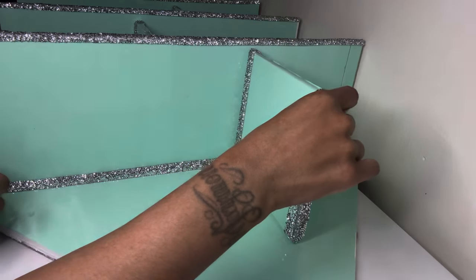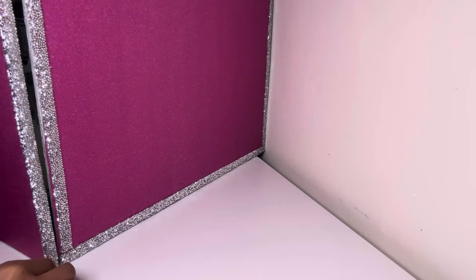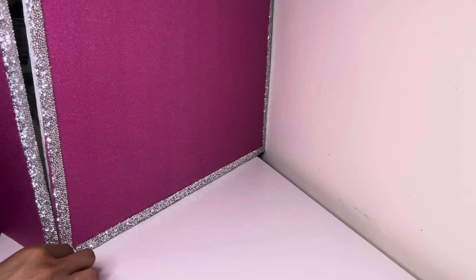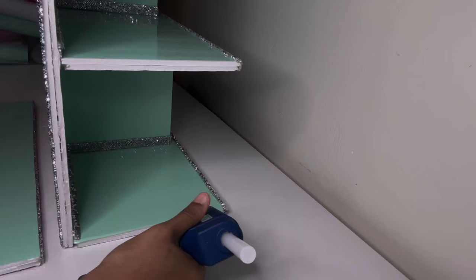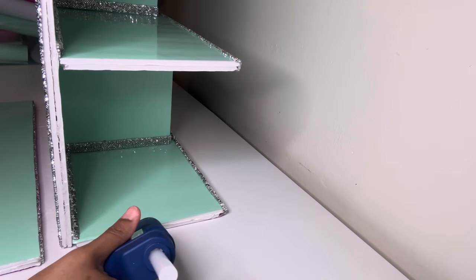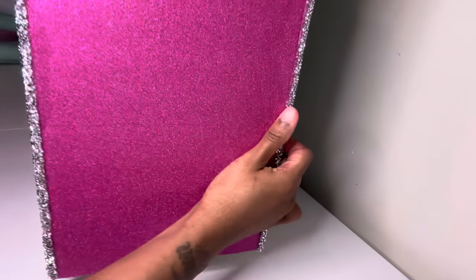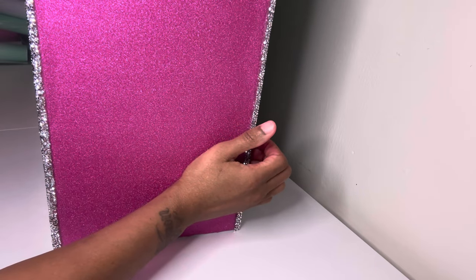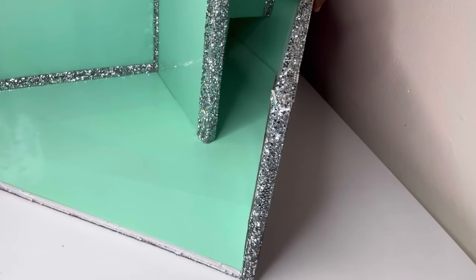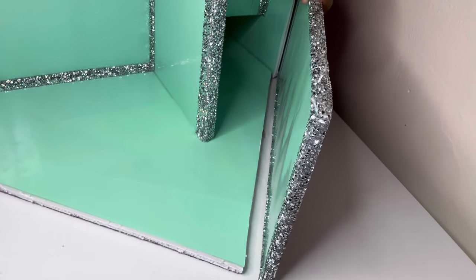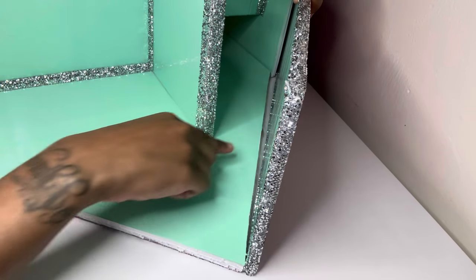Now I'm gluing my sides on and I'm pressing down very firmly until the glue adheres. This is the other side. This is the top left piece and since this piece does not lay flat, I will have a small gap, but I'll show y'all what I did to cover that up.